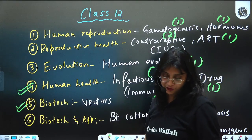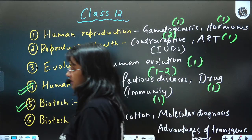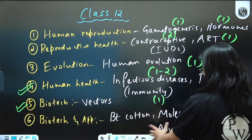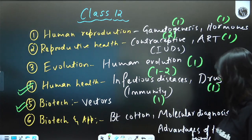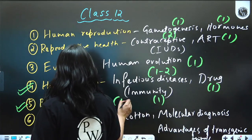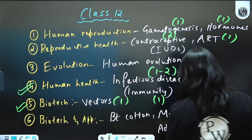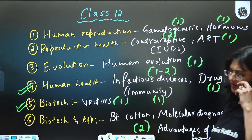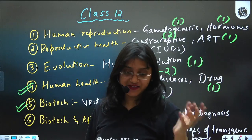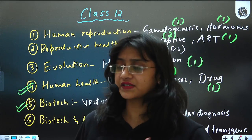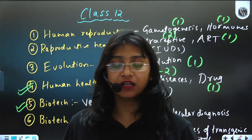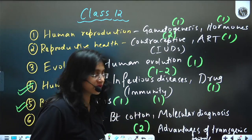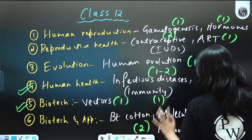The last chapter of Class 12 is Biotechnology and its Applications. A lot of topics are quite important here, but questions are usually asked from Bt cotton, molecular diagnosis, and the advantages of transgenic animals. You should know which protein is used to treat emphysema and details about the human alpha-lactalbumin protein. Around two questions can be expected from these topics together, plus one from vectors.